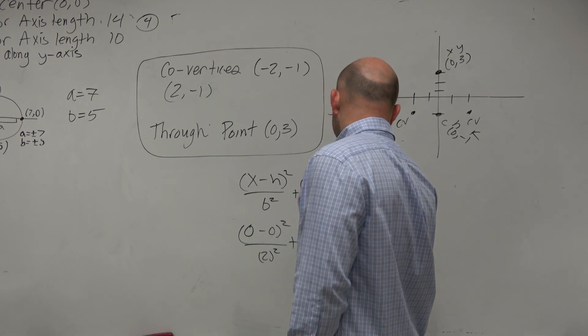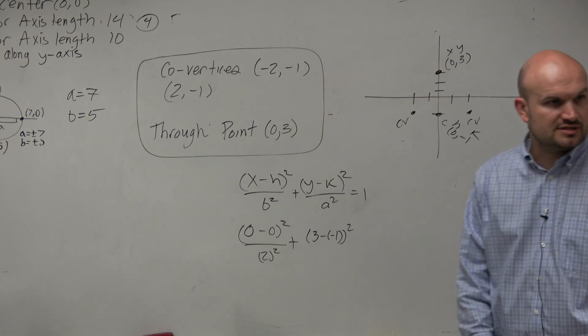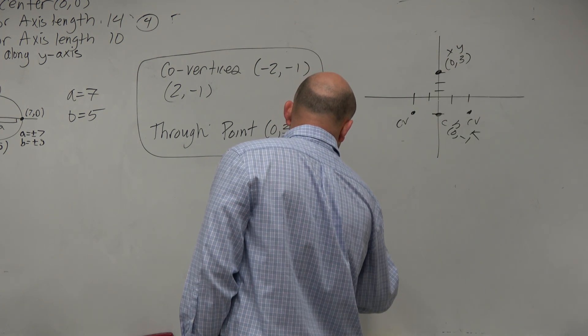...minus k, which is minus a negative 1. People usually forget those parentheses. And then all over a squared equals 1.